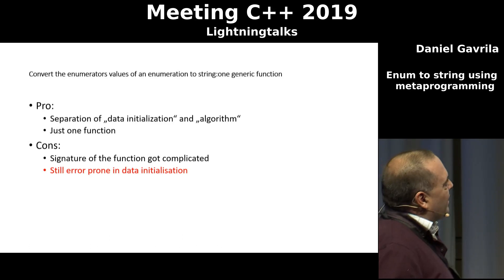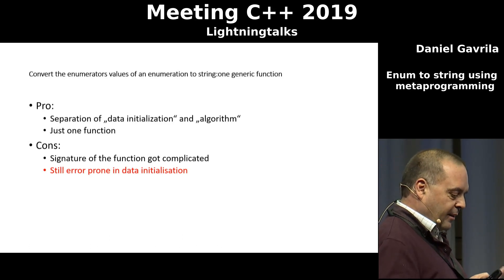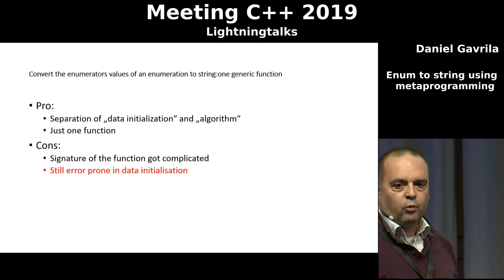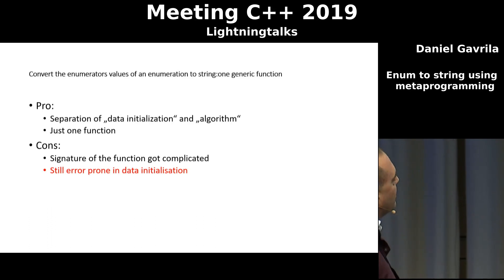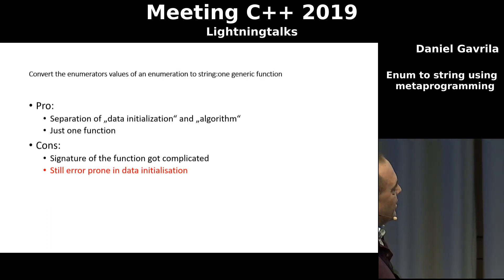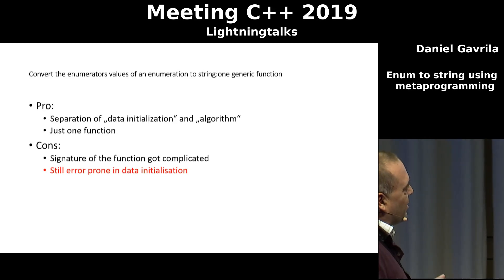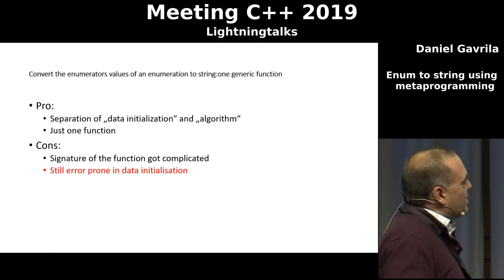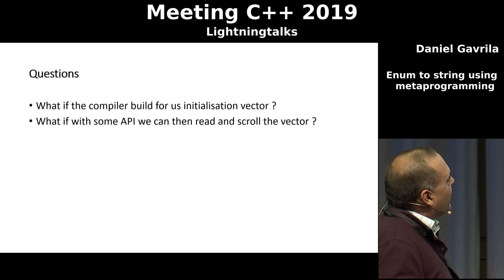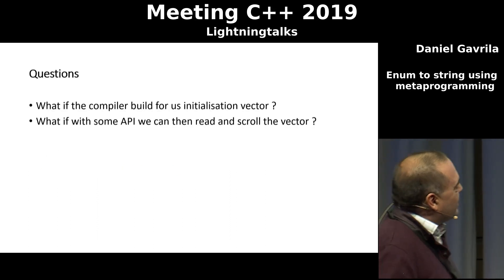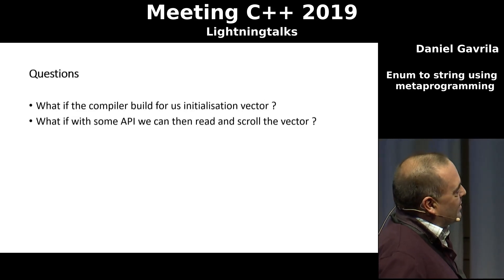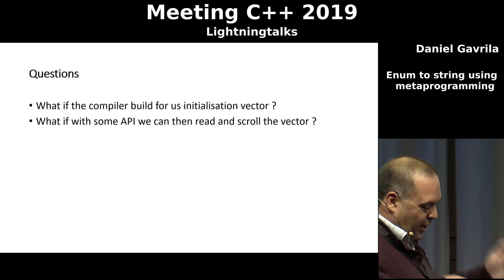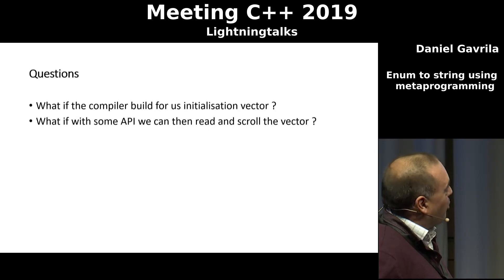So the pro is that I was able to separate the data initialization and the algorithm. I have just one function for all types of enumerators, though the signature gets complicated. But still I have the same problem — when I have to initialize the data, it's also not better. So now come the questions: what if the compiler built for us the initialization vector, and what if there is some magic API that can iterate the vector and get all the information we need?